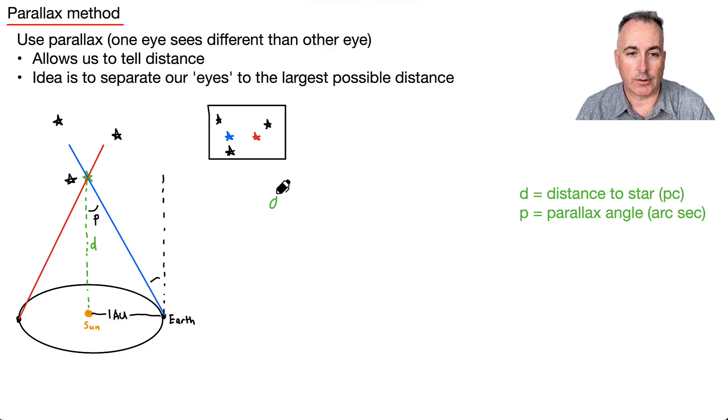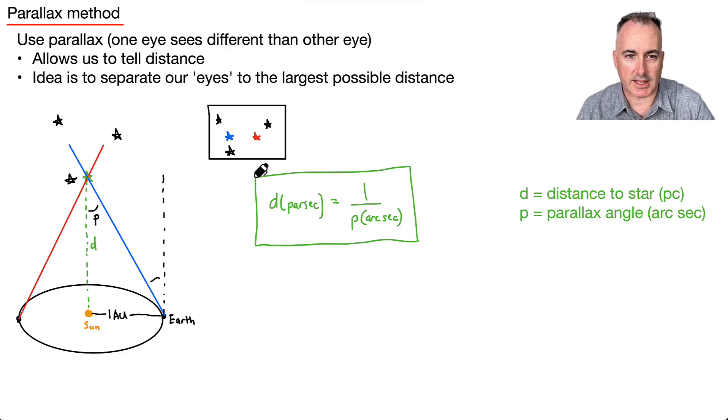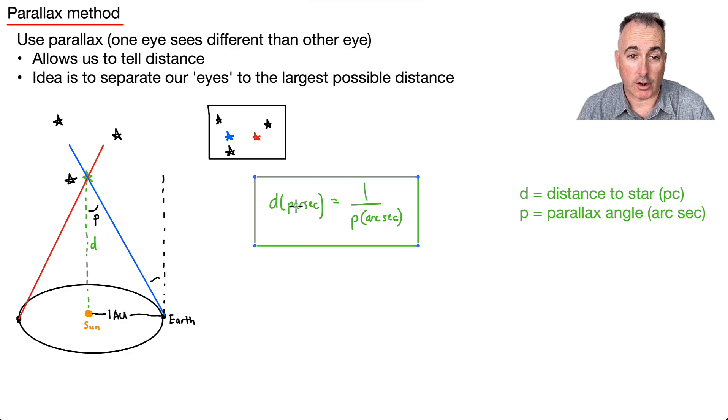It's kind of cool how it works out, and we have an equation for it. It goes d, and they even tell you it's in parsecs, equals one over p, and this right here is in arc seconds. So they really kind of remind you what the units are. Basically it tells you the distance to some star in parsecs is going to be equal to one over the parallax angle in arc seconds.